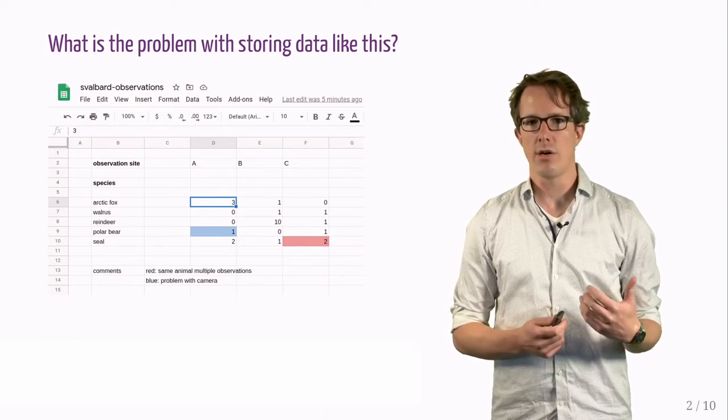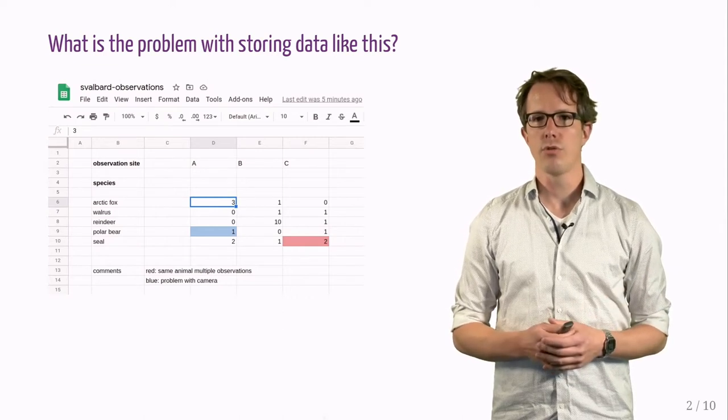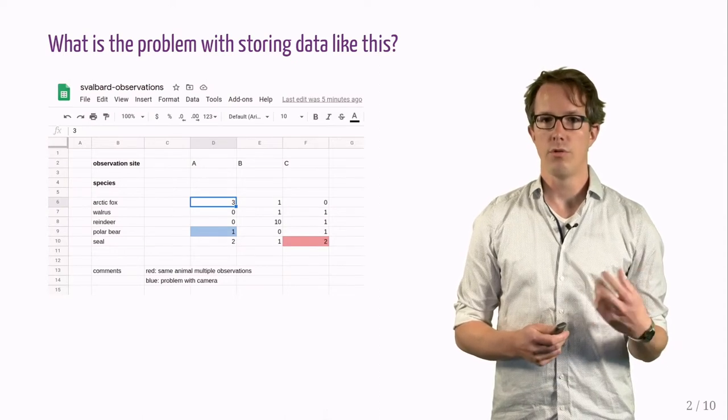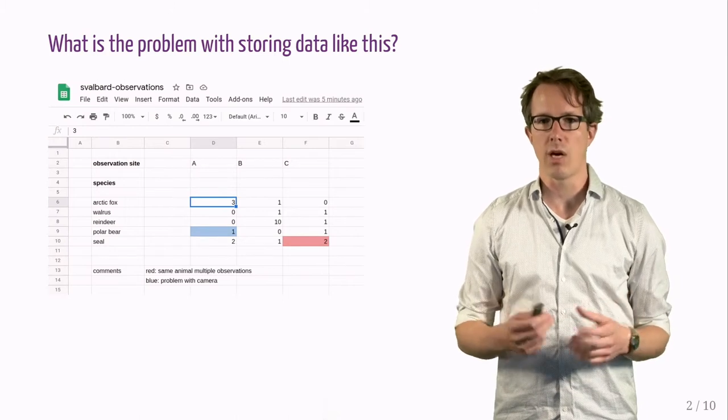Different species are on the left. The columns correspond to observation sites. Note that we also use some color coding, red and blue. Red represents multiple observations of the same animal, blue was some problem with the camera.